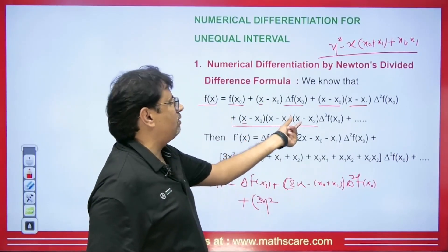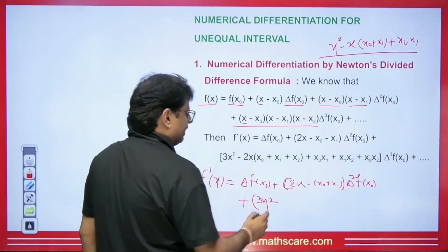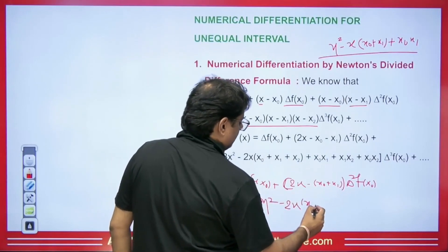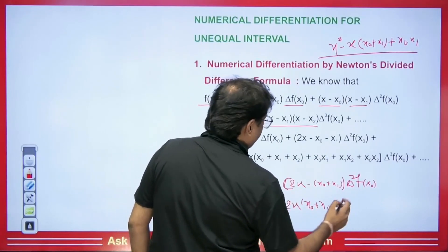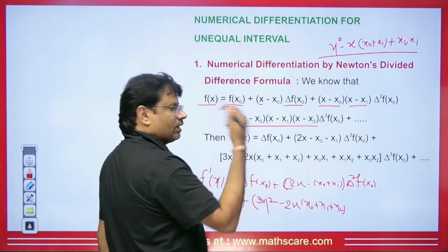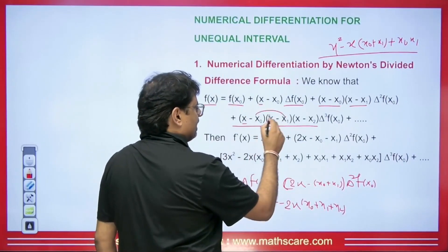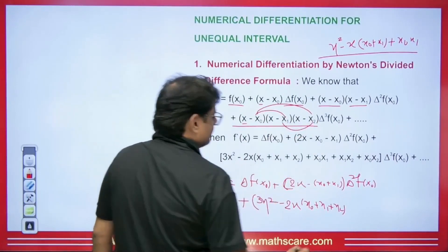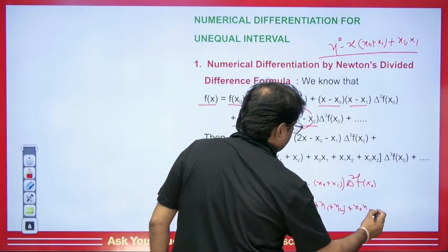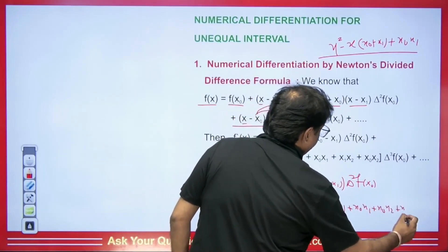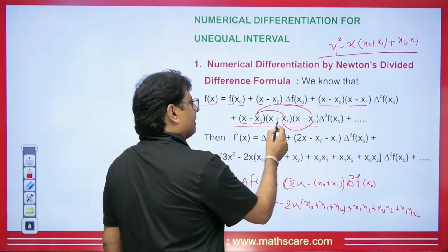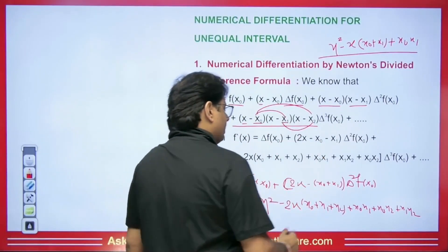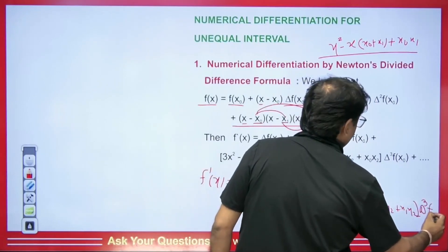With the x² term, x0, x1, and x2 will come. When we take the derivative of the x² part, we get minus 2x as the coefficient, and inside it we have x0, x1, and x2. After this, the coefficient of x will come — it will be x0·x1, x0·x2, and x1·x2. When we multiply these, the minus-minus becomes plus, so we get x0·x1 + x0·x2 + x1·x2. The constant x0·x1·x2 term differentiates to 0. So the final term is (3x² − 2x(x0+x1+x2) + x0·x1 + x0·x2 + x1·x2) · Δ³f(x0). This is the complete differentiated formula.